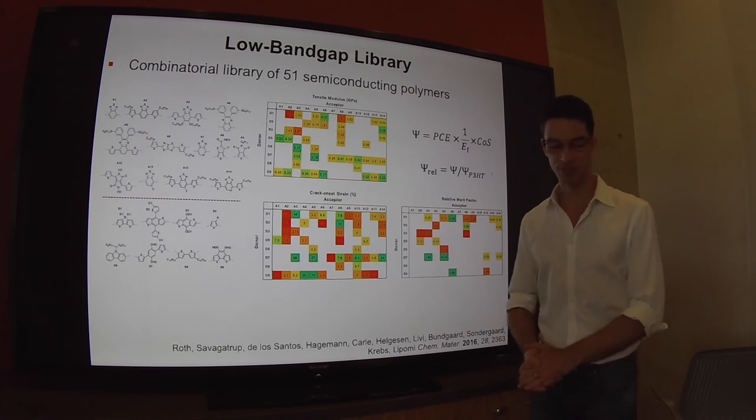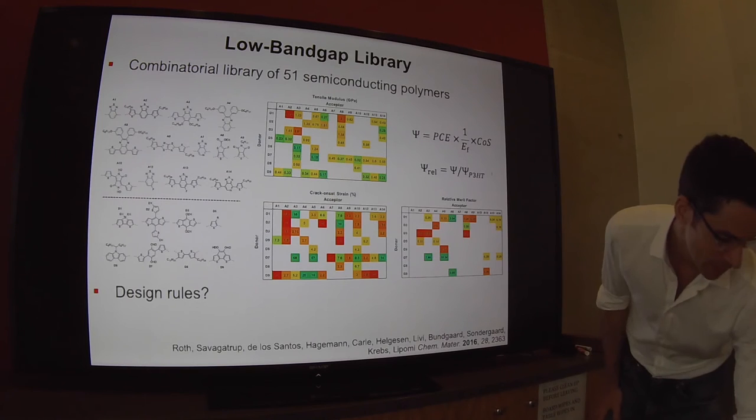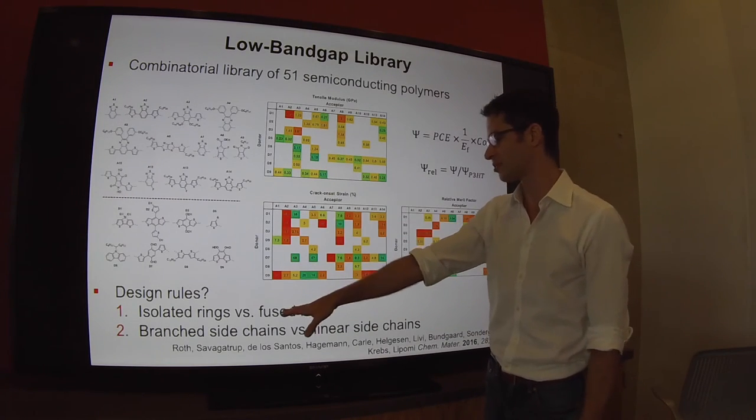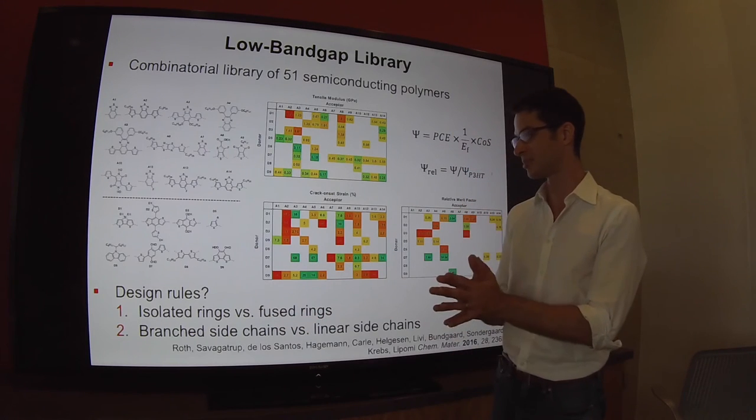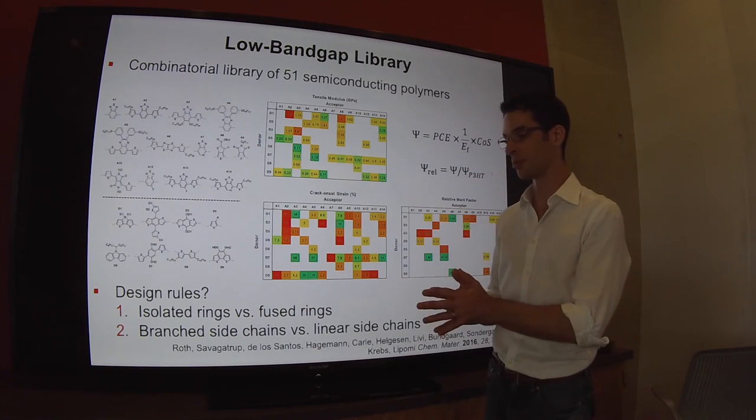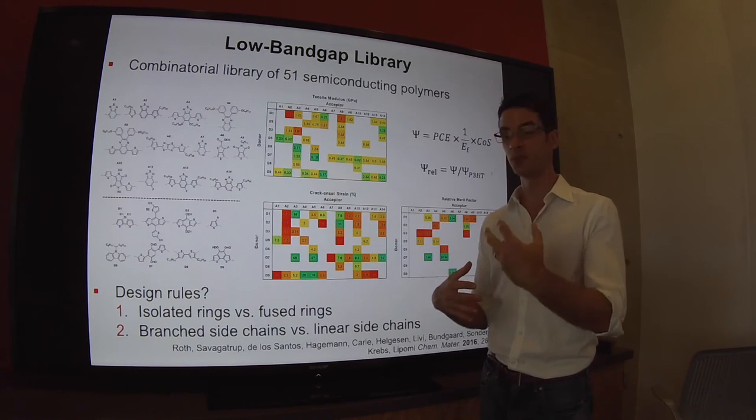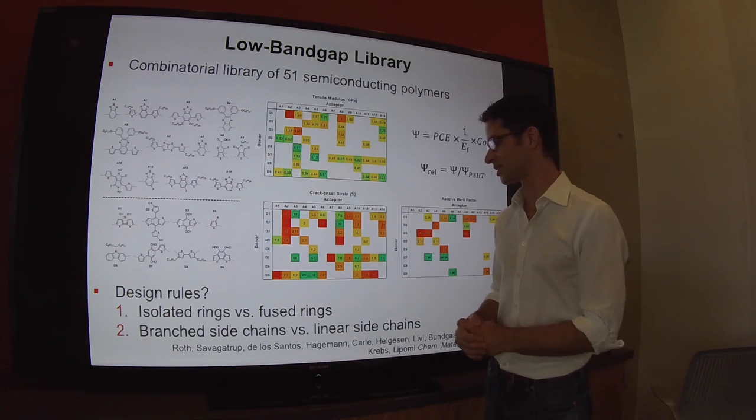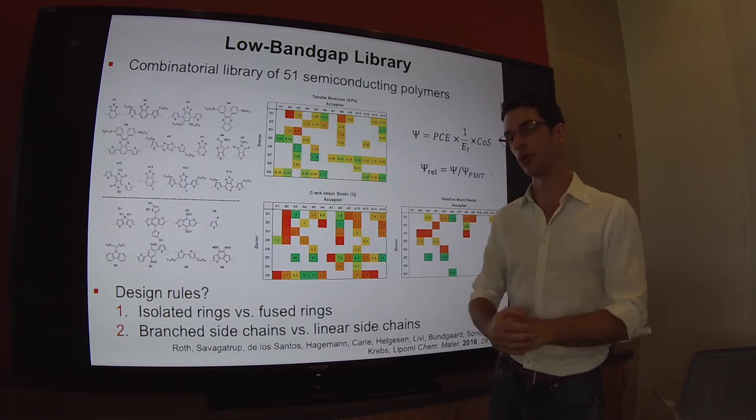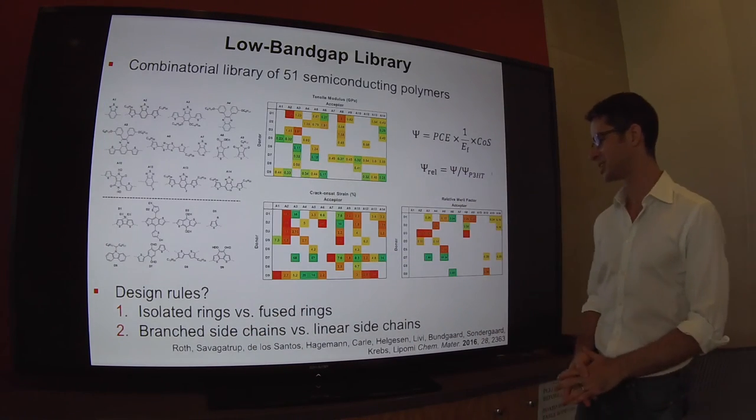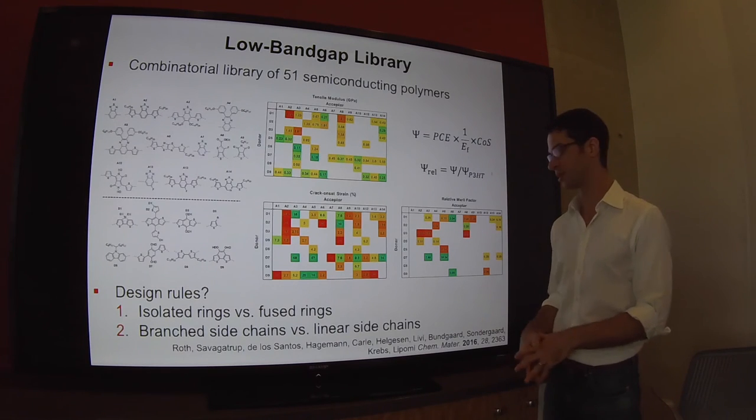What are the molecular design rules? One that came out of this library was that isolated rings tend to be more mechanically robust than fused rings. That kind of makes sense intuitively because they're more flexible, they have a lower barrier to rotation. Branched side chains tend to be more flexible or more deformable than materials with linear side chains.